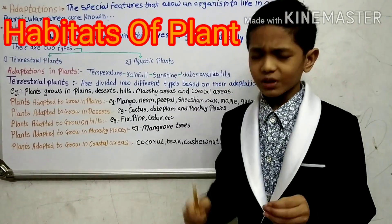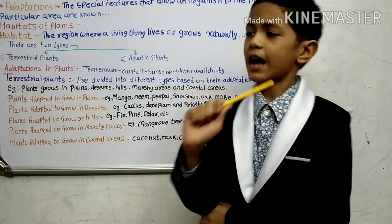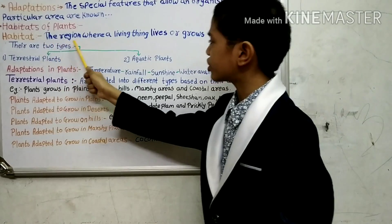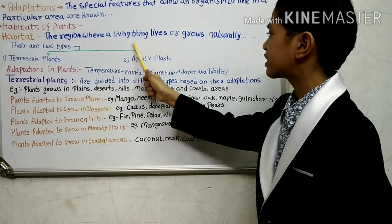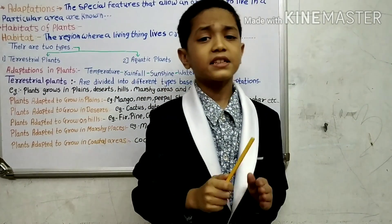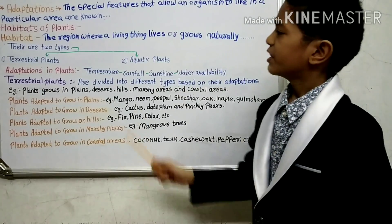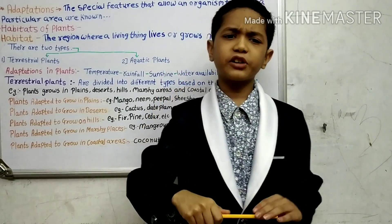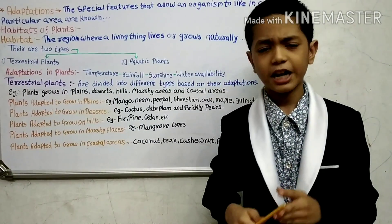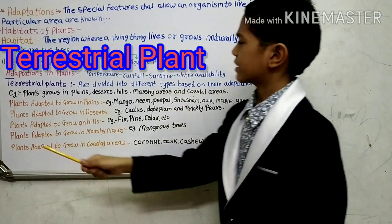Habitat means a region where a living thing lives or grows naturally is known as its habitat. Plants that differ greatly in their habitat can be divided into two parts: terrestrial plants and aquatic plants.